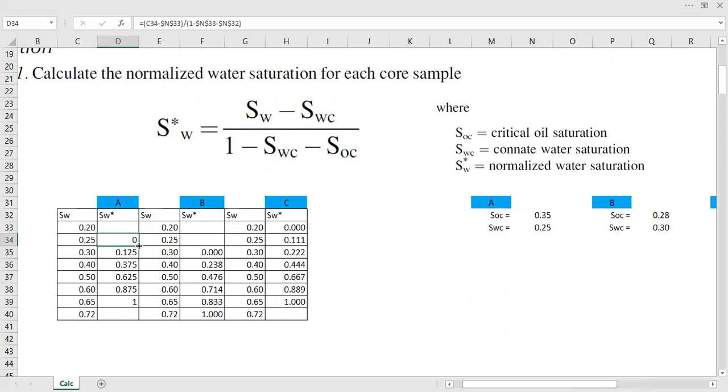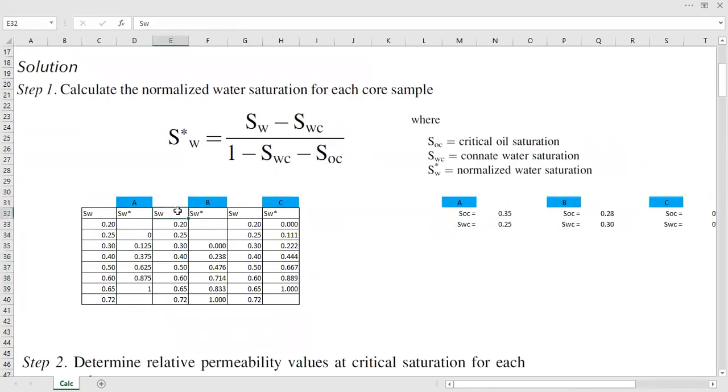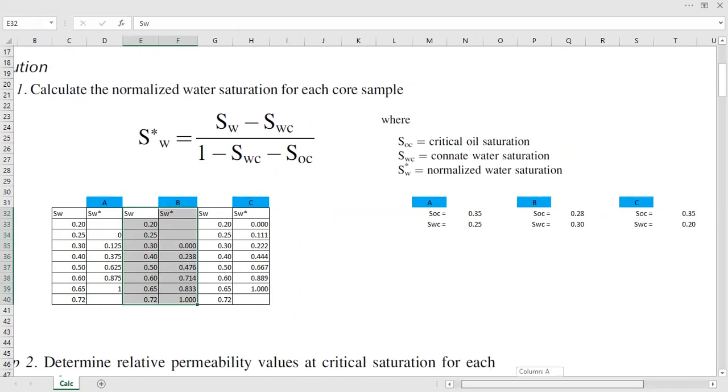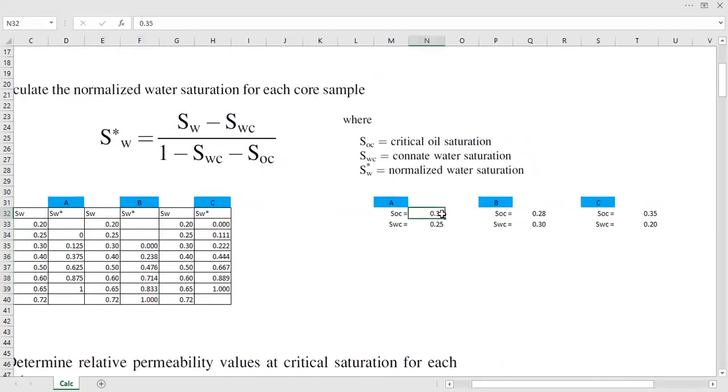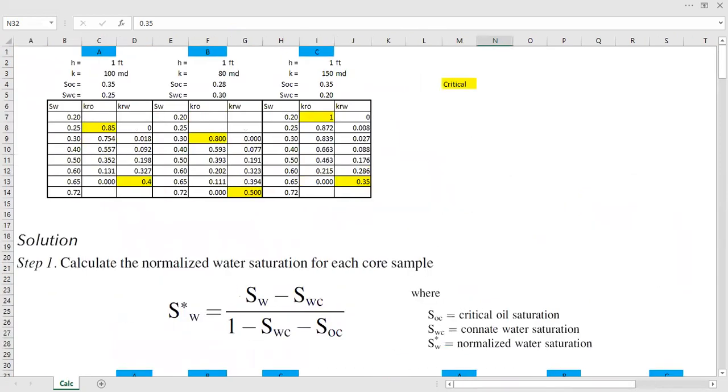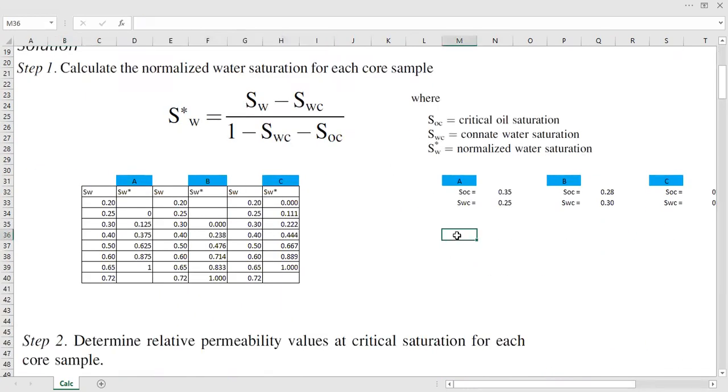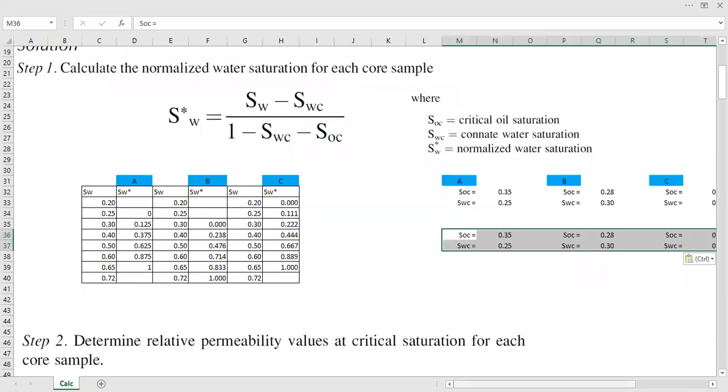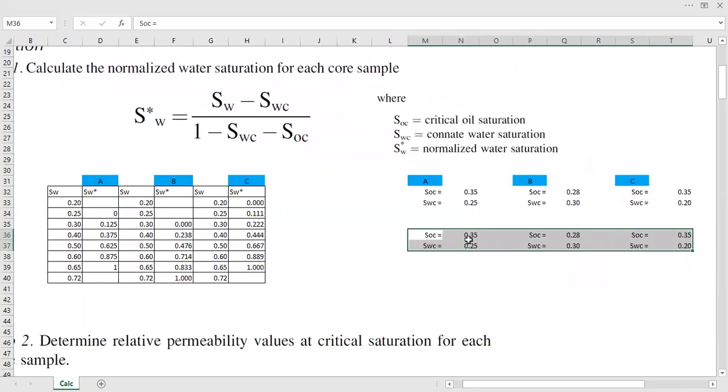So we get that and then we just drag like this. The same approach we do for core sample A, B, and C. And here I take this from the given data that I showed you earlier. So I just copy and then paste here to make me more comfortable to take this data.